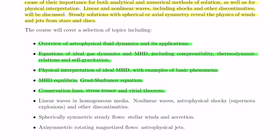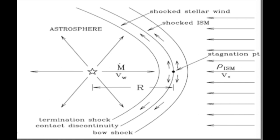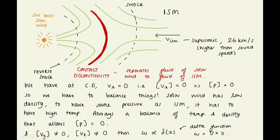The course then moves to linear waves in homogeneous media, non-linear waves, astrophysical shocks — supernova explosions — and other discontinuities. I'd learned about non-linear waves and shocks at undergrad but it was nice to apply them astrophysically. A particularly cool example involved analyzing the contact discontinuity between the interstellar medium and the solar wind: we looked at shock conditions between those two mediums and, because of a low density on one side, arrived at conclusions like there must be high temperature on the other side.